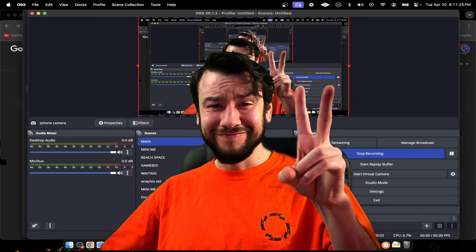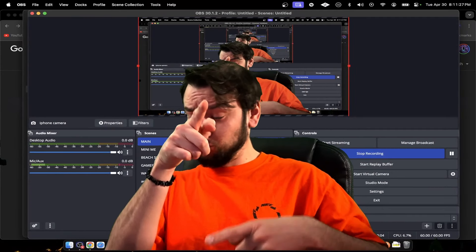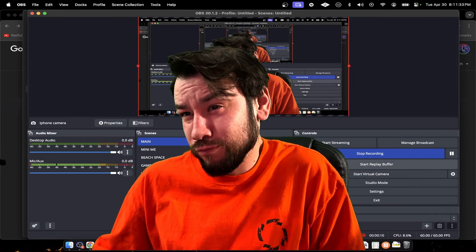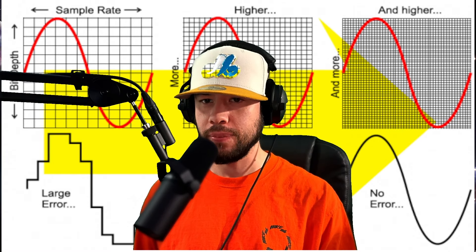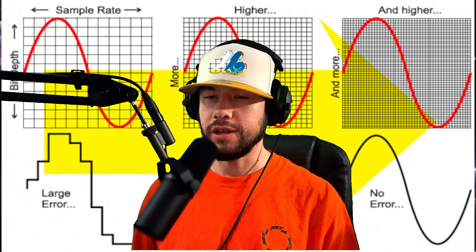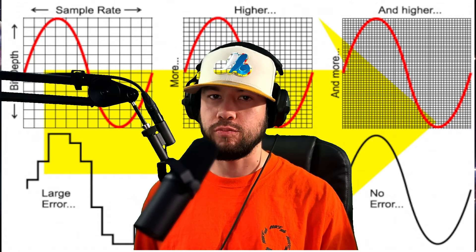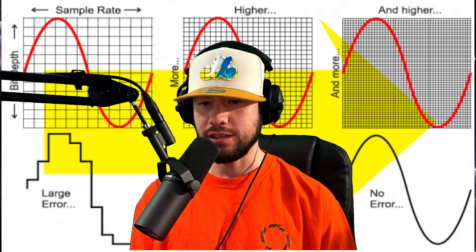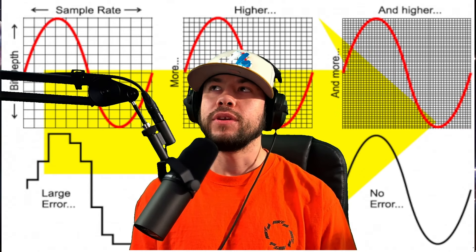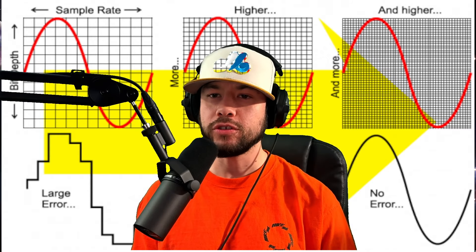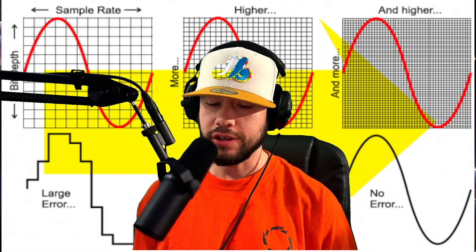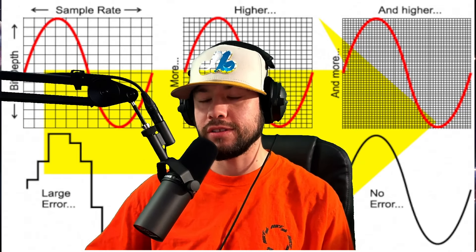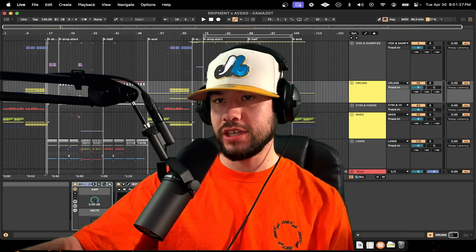Today we're talking about exporting your tracks — this is for beginners. We're going to dive deep into things I've been learning in audio engineering school, like sample rate, bit depth, digital audio, analog audio, aliasing, and different issues that may happen when exporting. We'll also go over MP3, WAV, and things you need to know when sending your song to distribution — Spotify, Apple Music, things like that.